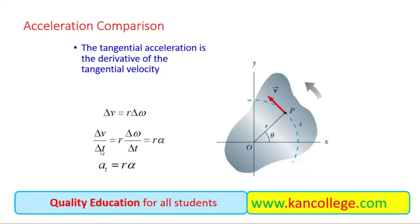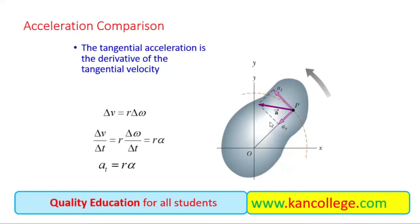If the angular speed changes more, then the linear speed will change more — by radius times as much. The rate of change of angular velocity per unit time is known as angular acceleration, denoted alpha. So the tangential linear acceleration is related to the angular acceleration by: tangential acceleration a equals R times alpha. You can always see that tangential acceleration equals radius times angular acceleration.